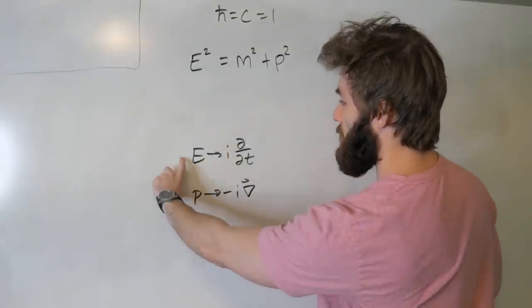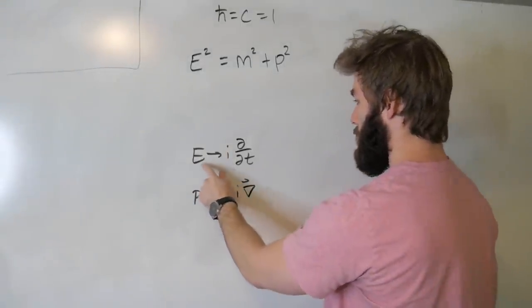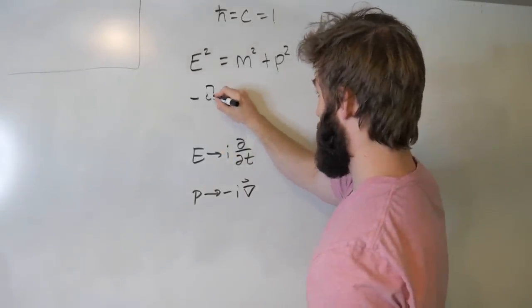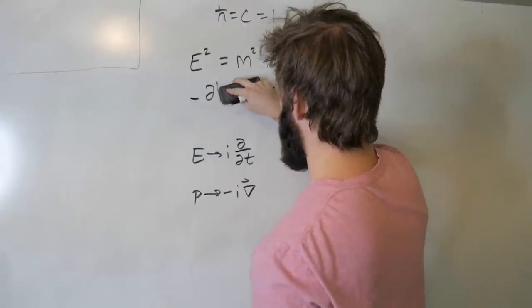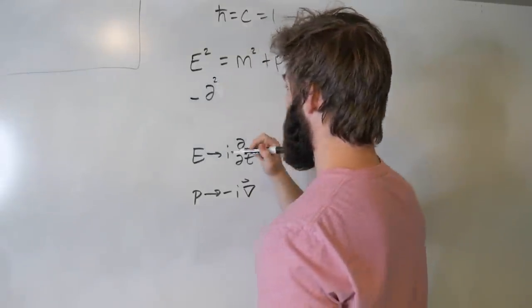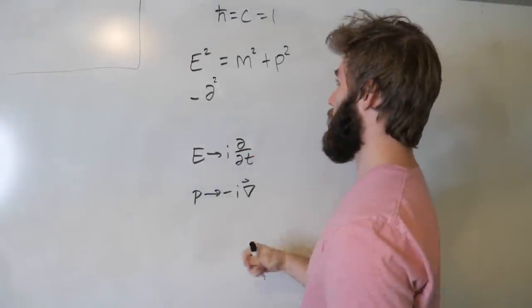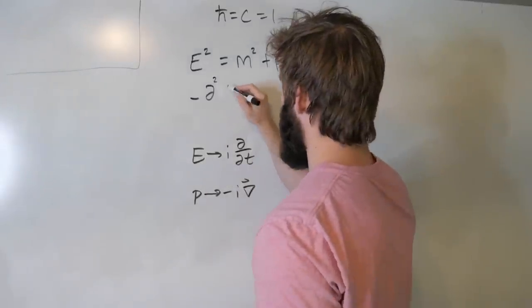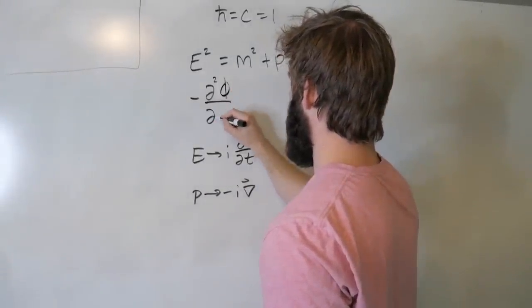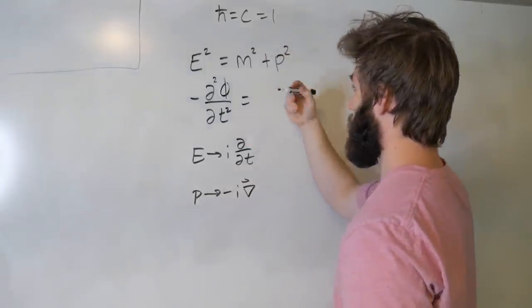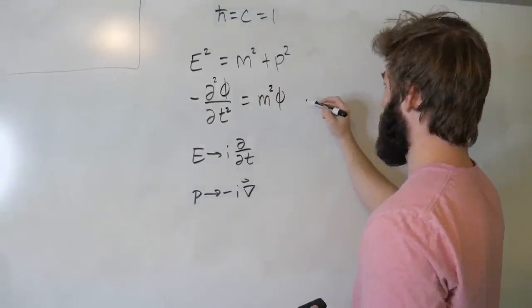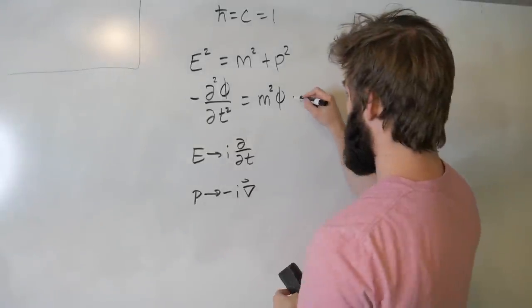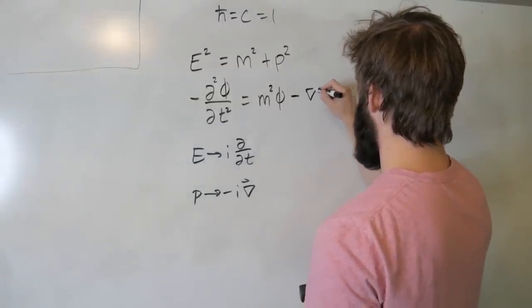So now we can just substitute in this relationship here where p goes to this, E goes to this, and this E squared just becomes, well, i squared is going to be minus 1, so it's going to be minus d squared. And this is going to be our thing that's acting on, it's not really going to be our wave function. You don't really call it a wave function when you're using the Klein-Gordon equation. It's more of like a scalar field. So I'm not going to use psi, I'm going to use phi. So minus d squared phi dt squared is equal to m squared times phi. And then we have a plus p squared, so it's minus i times minus i. That's going to be a minus times del squared phi.